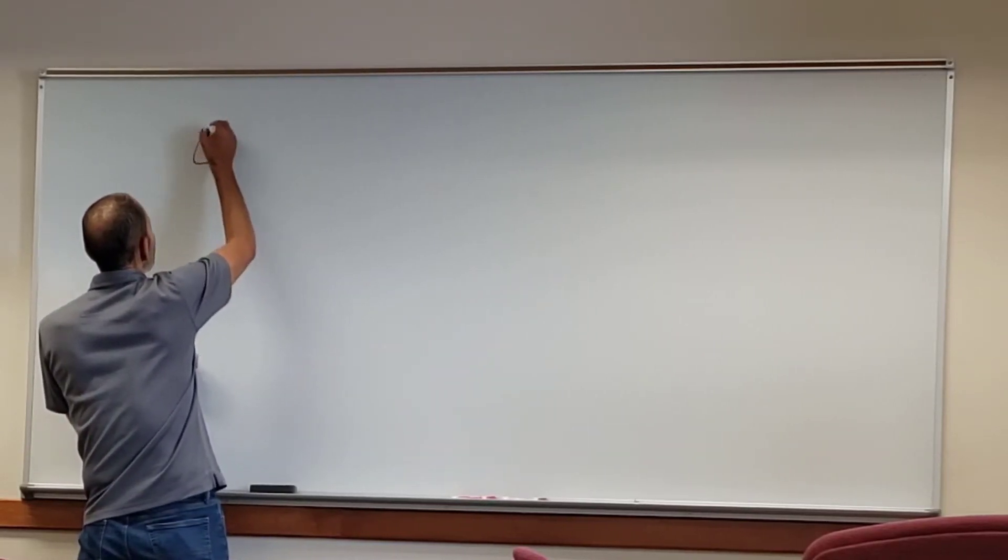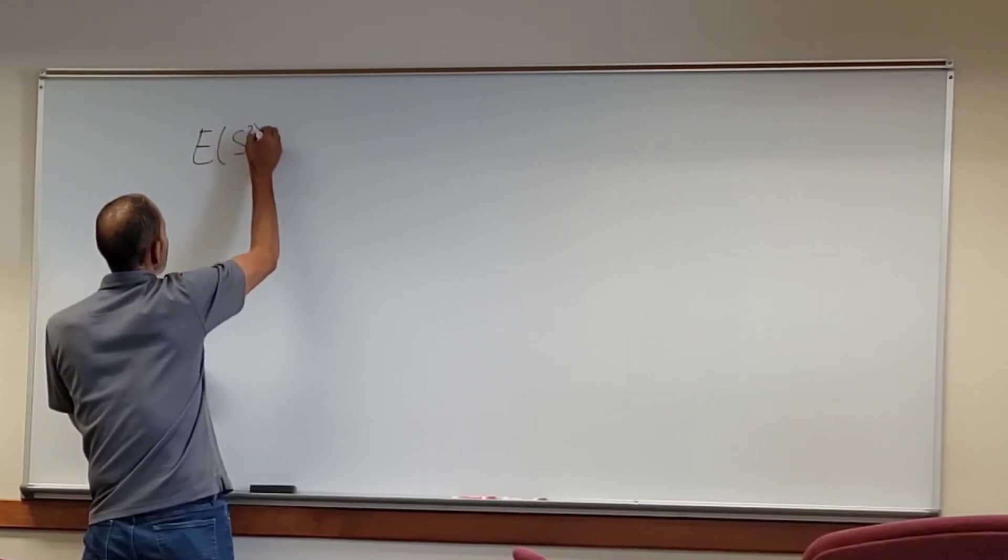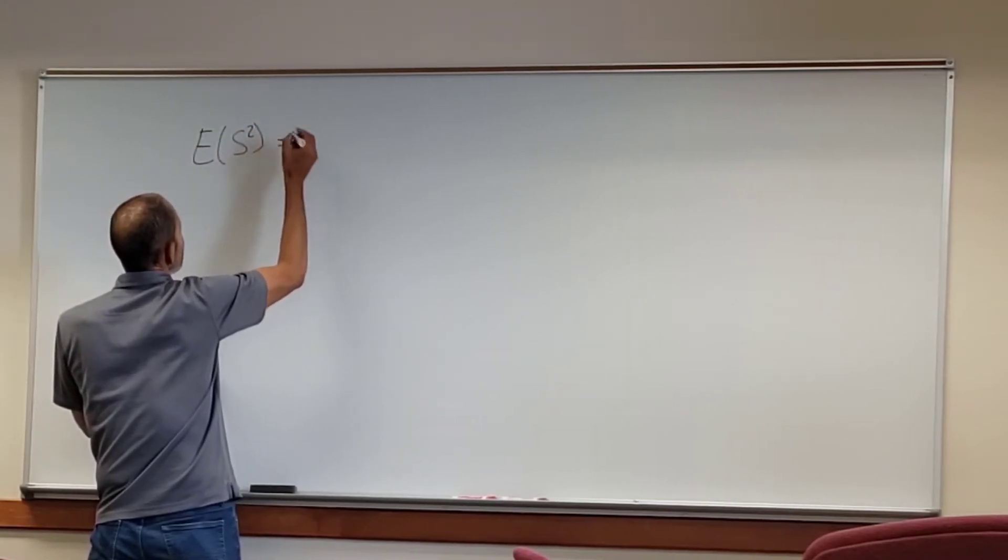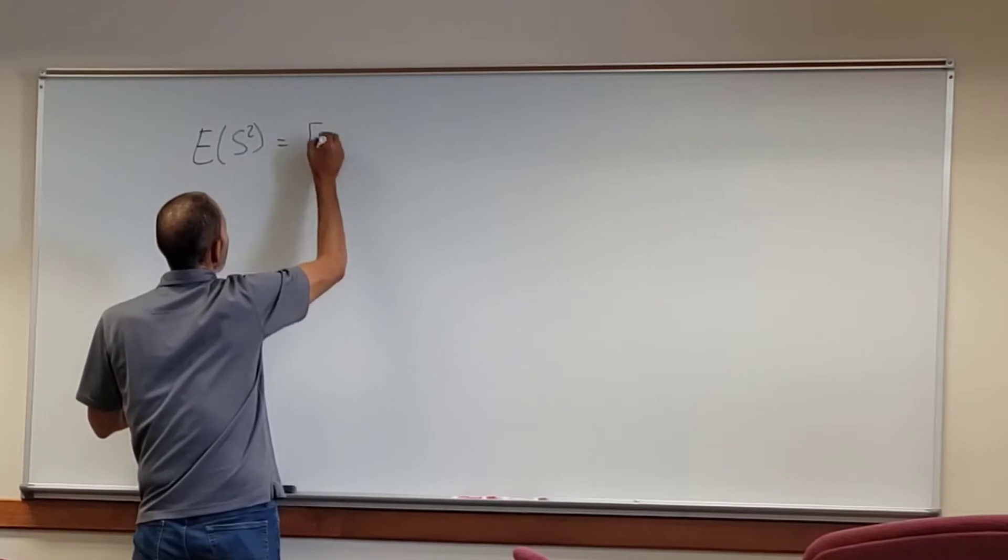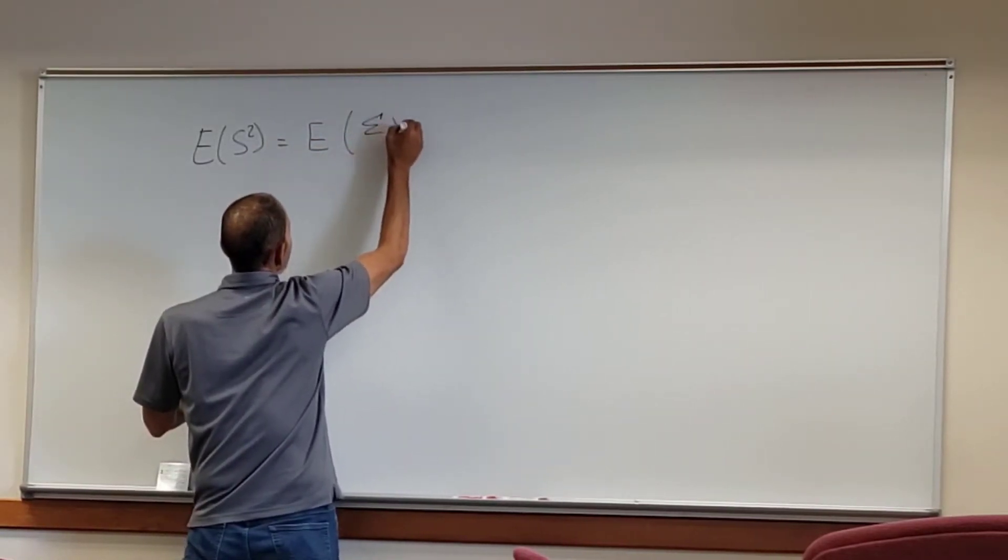Okay, here I am and what I'm working on is the expected value of the sample variance. The expected value we're hoping equals the population variance, well it's supposed to, right?